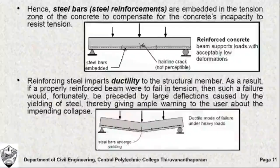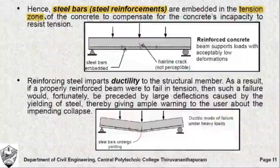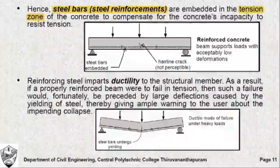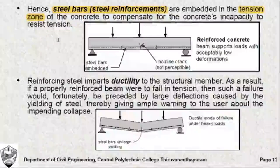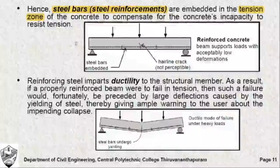It is because of this reason that we must use steel bars or steel reinforcements in the tension zone of flexural members. As you see in this figure, on the tension side you embed steel reinforcements in order to compensate for the concrete's incapacity to resist tension. Hence, we embed steel in structural members made up of concrete and we call them reinforced concrete structures or RCC structures.